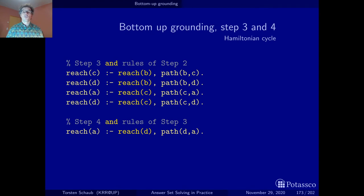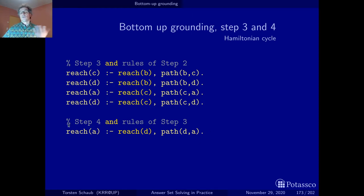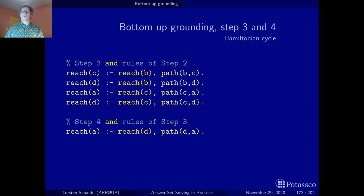At the third iteration, given that reach(b) and reach(c) were added to the atom base at step two, we can now form four new ground rules. We already had reach(a) and reach(c), but the new atom is reach(d), and with it we can form in the next step a ground rule giving yet another alternative derivation of reach(a). In the fifth iteration no new heads are derivable, so the procedure does not iterate further and returns the ground instantiation relative to the last atom base as the result of grounding our Hamiltonian cycle instance.